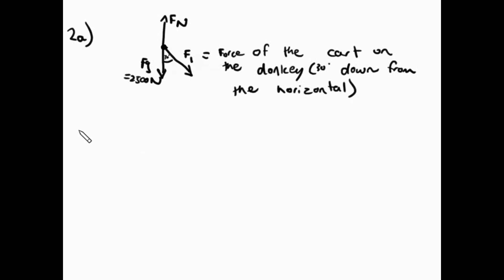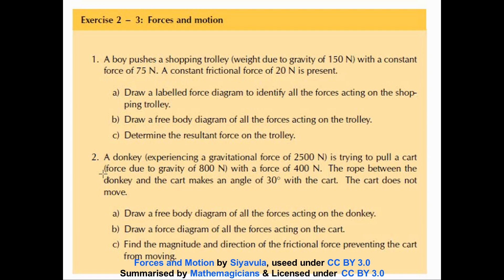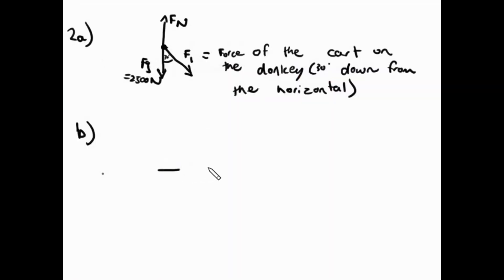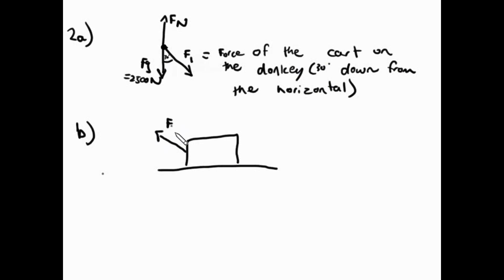For B, draw a force diagram for all the forces acting on the cart. We draw our surface and the cart. We know there's a force F2 pulling upward at an angle from the rope. There is a gravitational force downward, a normal force upward, and because the donkey is trying to pull the cart, there must also be a force of friction.